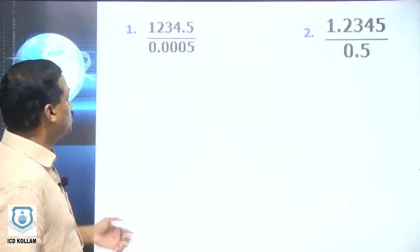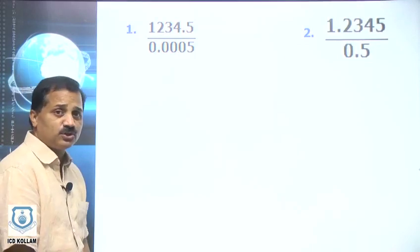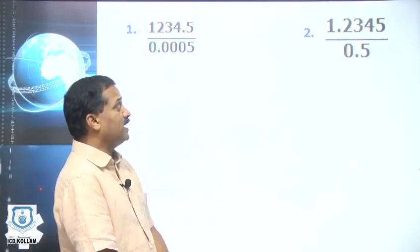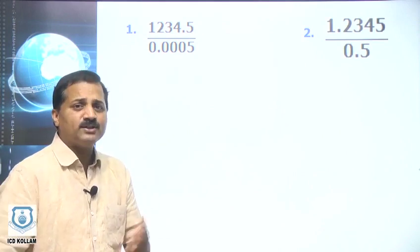I have given you two questions. The first one is 1234.5 divided by 0.0005. The second being 1.2345 divided by 0.5. So let us do.